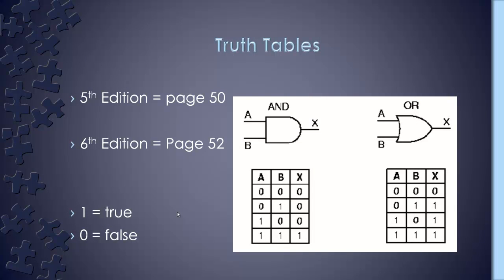There are truth tables in the book — page 50 in the fifth edition, page 52 in the sixth. A zero is false and a one is true. When using the double ampersand (AND), both parts have to be true for the expression to be true; if only one is true, the expression is still false. With the OR statement (double pipe), only one has to be true. Make sure you're good with this concept because you'll see it on the quiz and the exam.